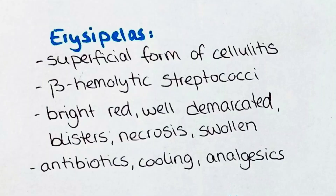The next disease is erysipelas. It is a superficial form of cellulitis and only affects the more superior layers of the dermis, in opposition to cellulitis, which extends down to the subcutaneous tissue. The predisposing factors are the same as for cellulitis. A key difference is the causative bacteria — here, nearly all cases are caused by beta-hemolytic streptococci. The onset and development of erysipelas is more acute than in the other disorders.